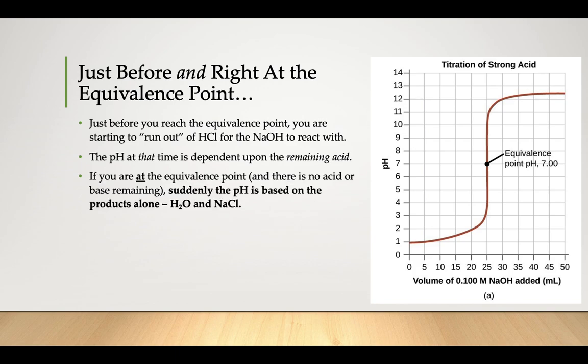But if you're at the equivalence point, what we've been looking at before spring break there, there's no acid or base remaining. You just have products only. So suddenly the pH is based on the products alone, your water and sodium chloride. What's going to happen is your pH will suddenly spike to 7. So you can see that really sharp increase on the graph there of the line pretty much heading straight up.